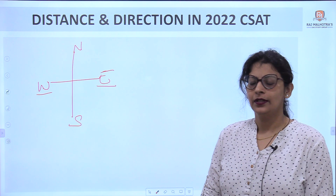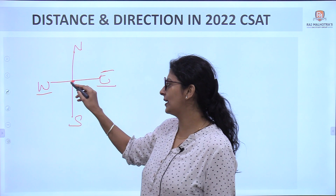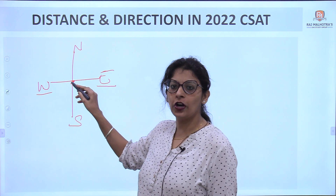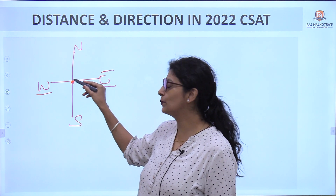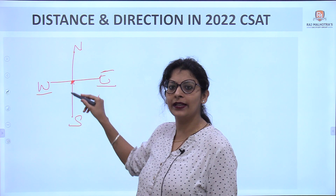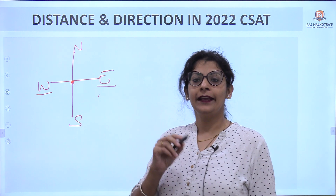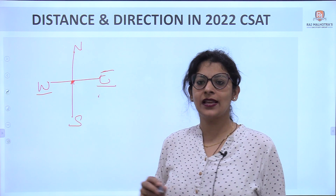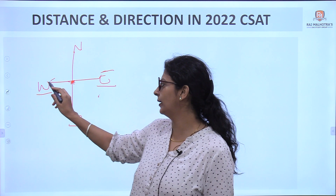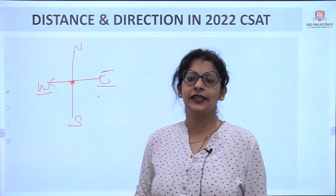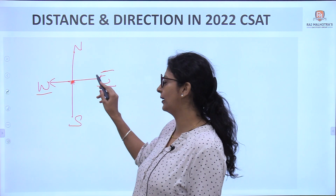In a question, if a person starts walking in the North direction, we start from the midpoint and move upward. If moving South, we move downwards. If moving West, we move to the left. If moving East, we move to the right.